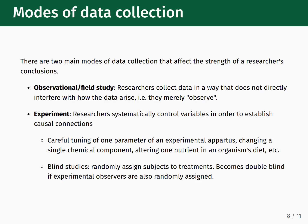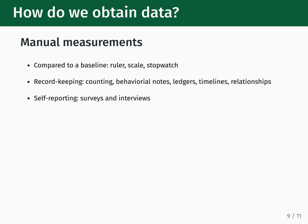Within these modes of data collection, how do we actually end up with data that we can analyze? There are several different classifications to consider. First up are manual measurements, some of the oldest methods at our disposal. One form is comparison against a baseline, with examples including using a ruler, weighing things with a scale, or measuring time with a stopwatch. Another form is record-keeping — counting things, writing down behavioral notes, keeping ledgers, timelines, and noting relationships between people. Yet another form is self-reporting, which includes surveys and interviews.